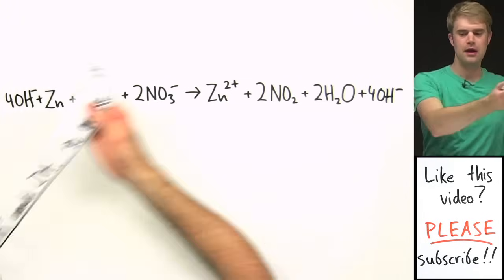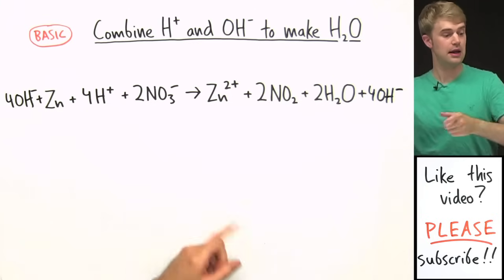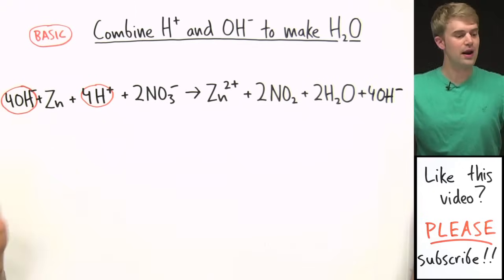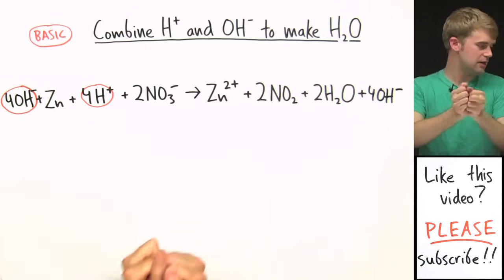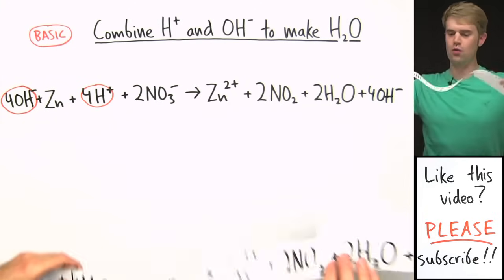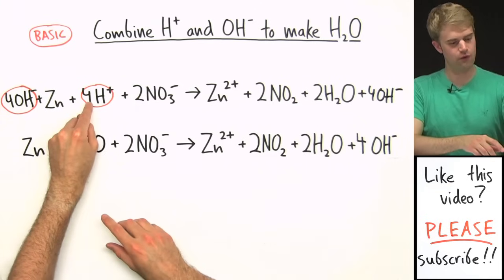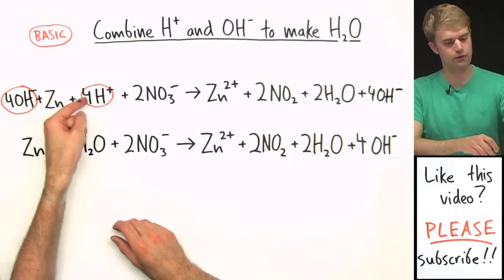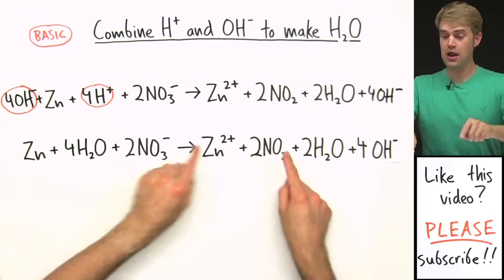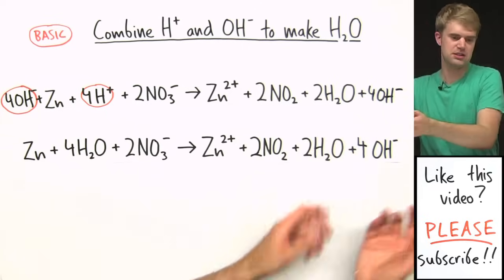Next, I'm going to combine the H⁺ and OH⁻ to make H₂O. On the left side, the four H⁺ and four OH⁻ come together to make four H₂O. Nothing happened on the right side because there weren't any H⁺ for the OH⁻ to combine with, so the four OH⁻ are just sitting over there.